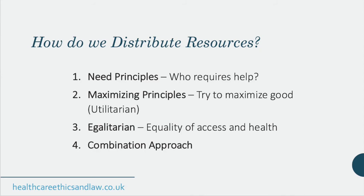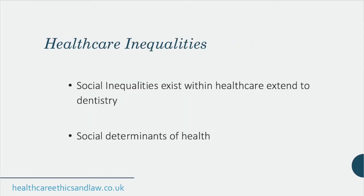The third approach is the egalitarian principle, which tries to provide equal access and health to everyone regardless of who they are. In most cases we tend to take a combination approach — for example, allocating 50% of resources to those in need and using the rest to maximize benefit. Despite our best efforts at resource distribution, healthcare inequalities still exist. Evidence shows those from less well-off backgrounds are more likely to have a higher DMFT score, relating to what we call the social determinants of health.